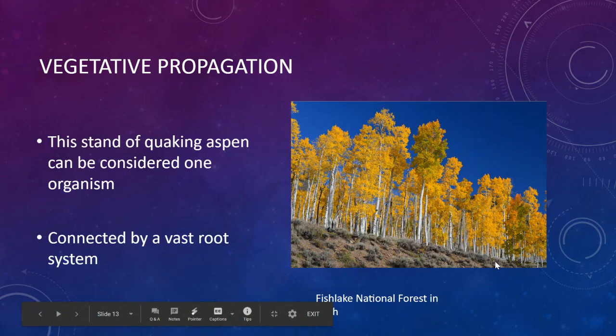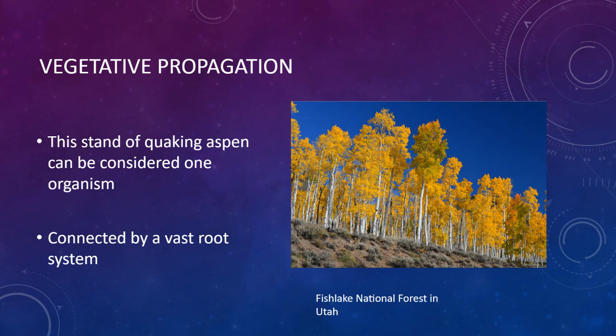This stand of quaking aspen can be considered one organism because they're all connected by a vast root system. This is in Utah at Fish Lake National Forest, and it's one of the largest organisms in the world — essentially the whole forest is one tree. The trees are genetically identical; they have the same chromosomes and sequences.